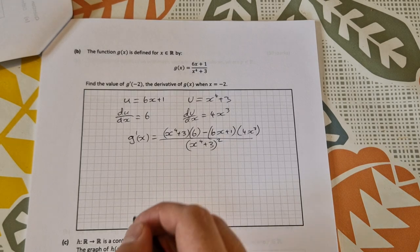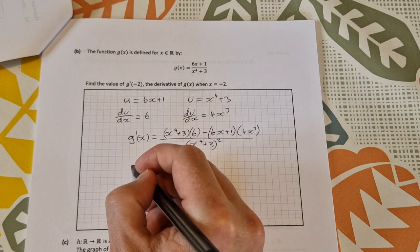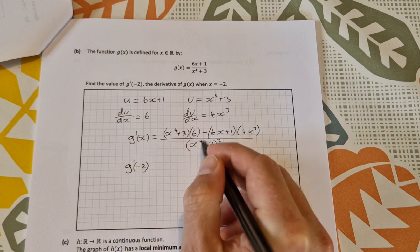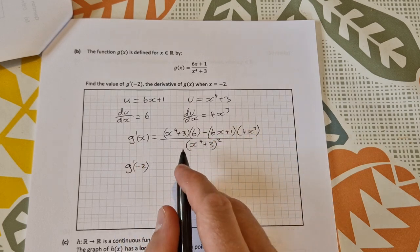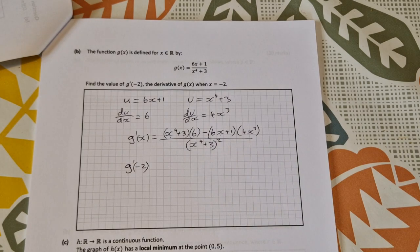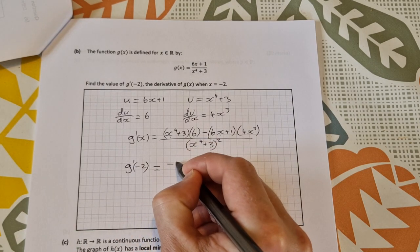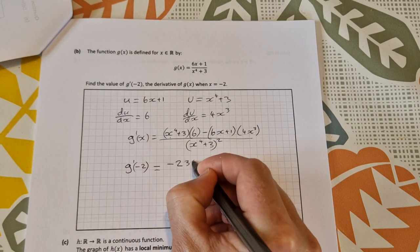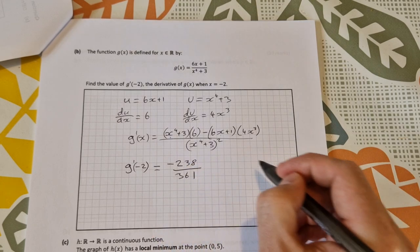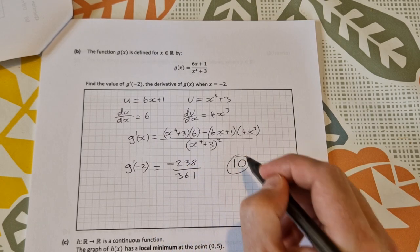Then sub -2 straight into that and put it into your calculator. For g'(-2), you don't have to work out any of that algebra, just sub in -2 for all of these. Be very careful with your brackets. You should get the answer -238/361. That is worth 10 marks.